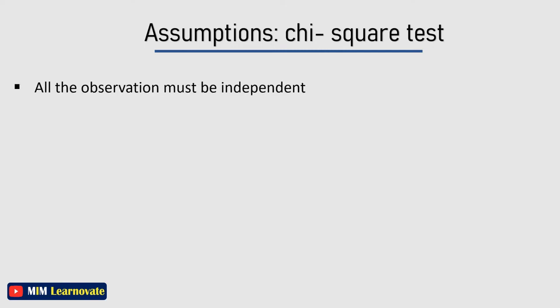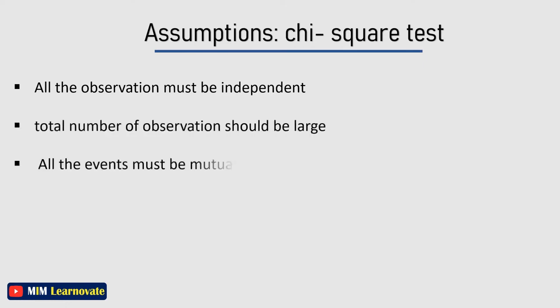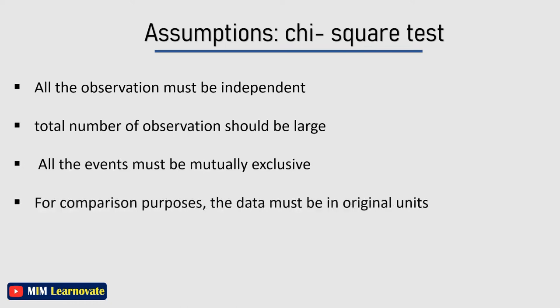Assumptions for the validity of chi-squared test: all the observations must be independent; no individual item should be included twice or more in the sample; the total number of observations should be large; all the events must be mutually exclusive; and for comparison purposes, the data must be in original units.